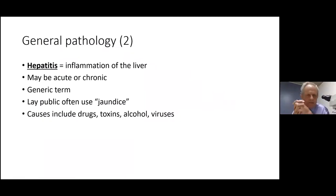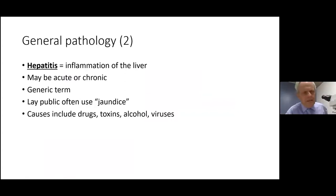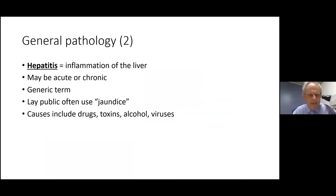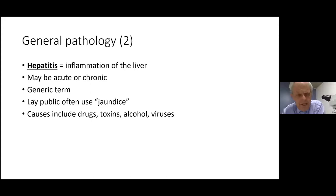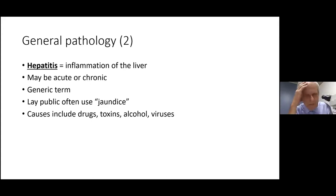Moving on to inflammatory changes in the liver: the first is hepatitis. Hepatitis is really just a generic term — unfortunately many people use it to imply viral hepatitis, which from a fundamental point of view is incorrect. Hepatitis simply means inflammation of the liver, and the causes are multifactorial. The inflammation can be acute or chronic. Chronic hepatitis is by definition continuing liver disease after six months of illness. It's important not to confuse the two.